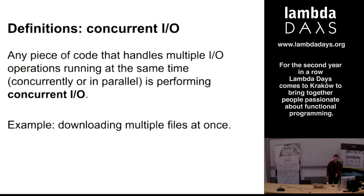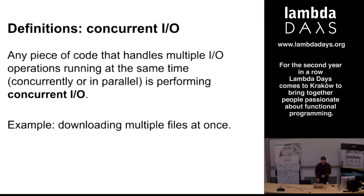What is concurrent I.O.? Concurrent I.O. is basically a piece of code or an approach to handling multiple tasks that involve I.O. at the same time. This is essential in developing applications because we want our applications to be responsive — we need a way to have a task running and at the same time perform other tasks, whether computations or another I.O.